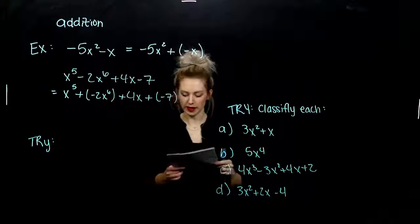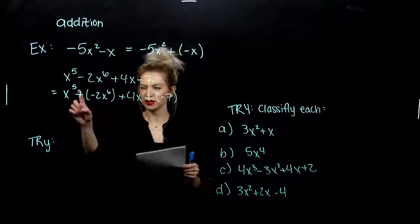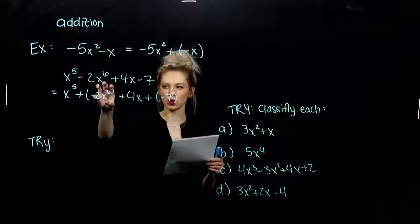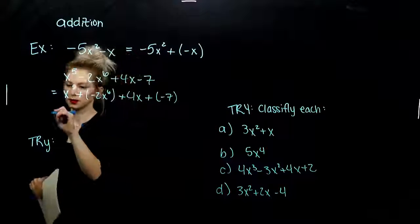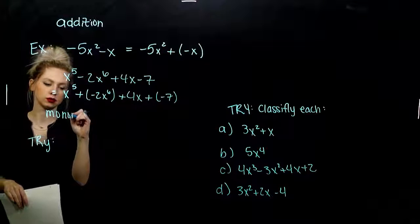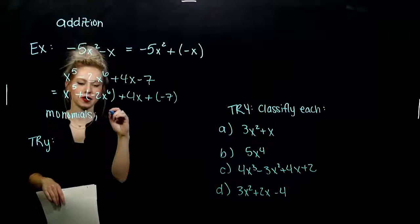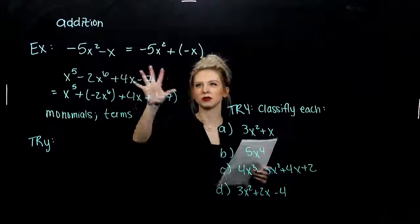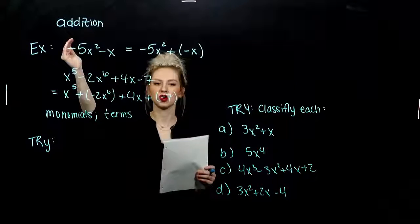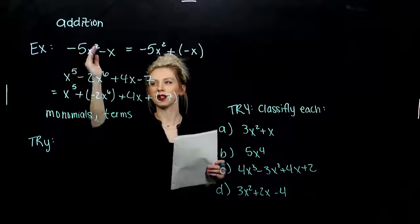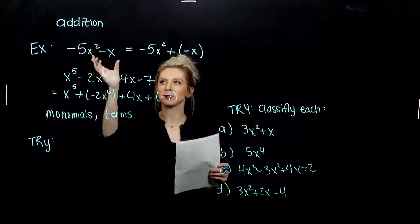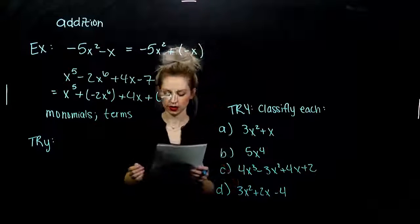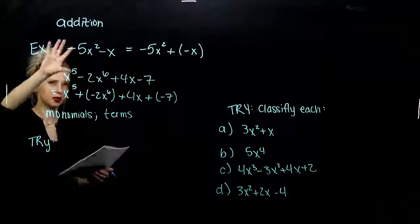When we do that, each polynomial is written using only additions. Each of these pieces are monomials — one term — and each of them are called terms. An easier way to think about it, instead of rewriting it as addition, is just that the sign goes with the thing to the right. So my term is negative 5x squared, my term is negative x, like we could see if we did write it with addition.